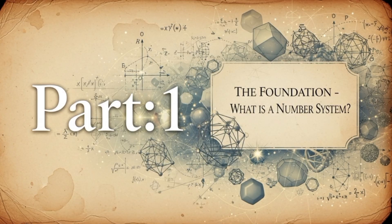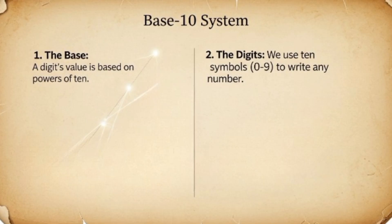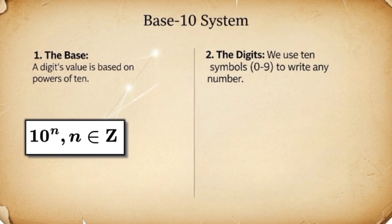To start our journey, we need to understand how we write numbers. We use the base 10 or decimal system. It's built on two simple rules. Rule 1: The base. We use 10 as our base. This means each digit's value depends on its position, multiplying by powers of 10.